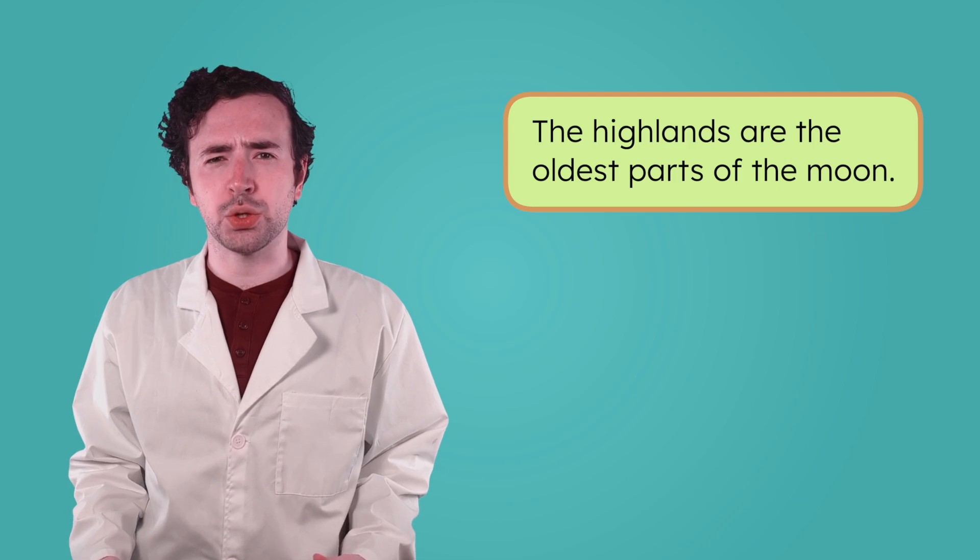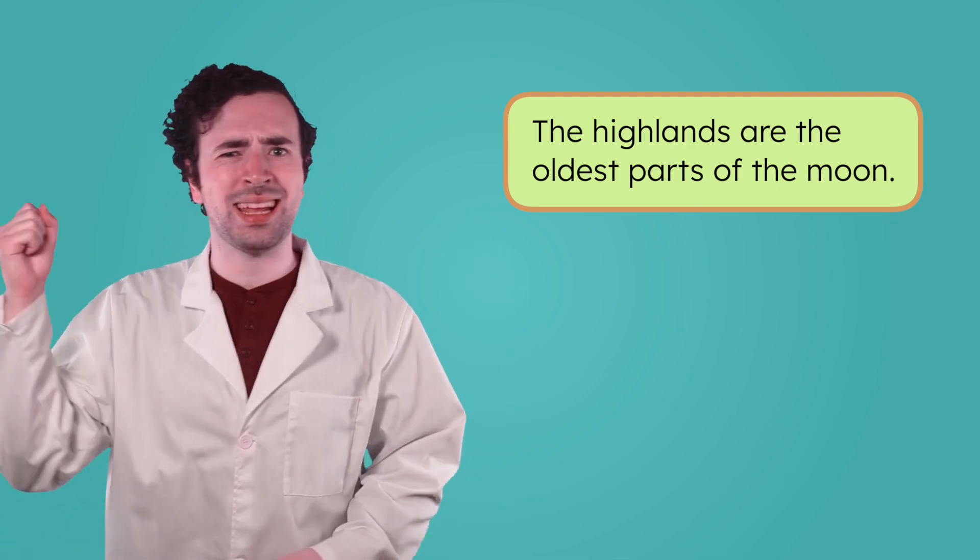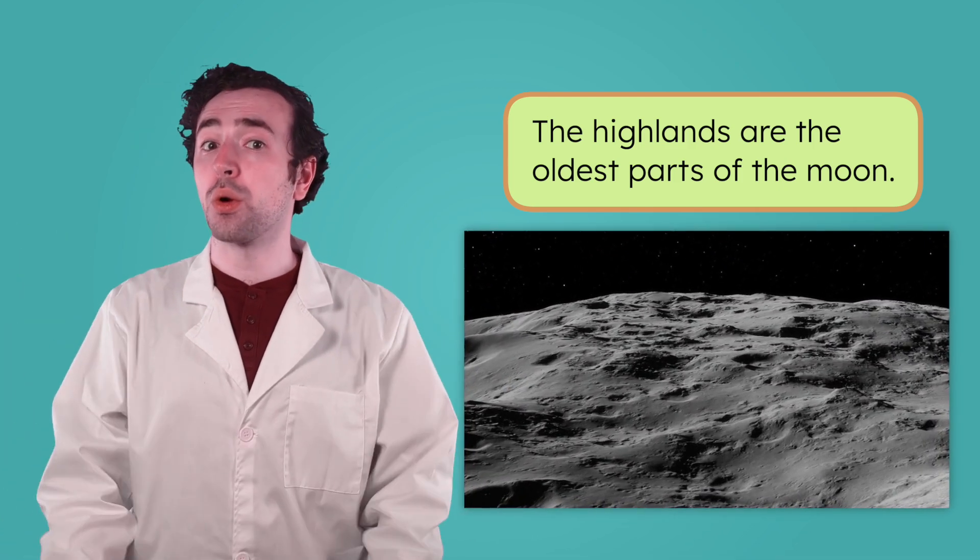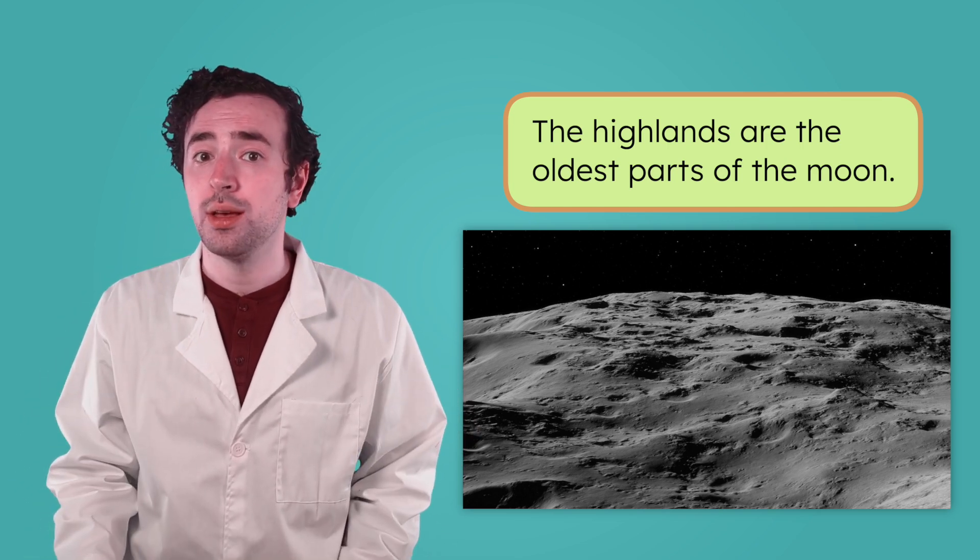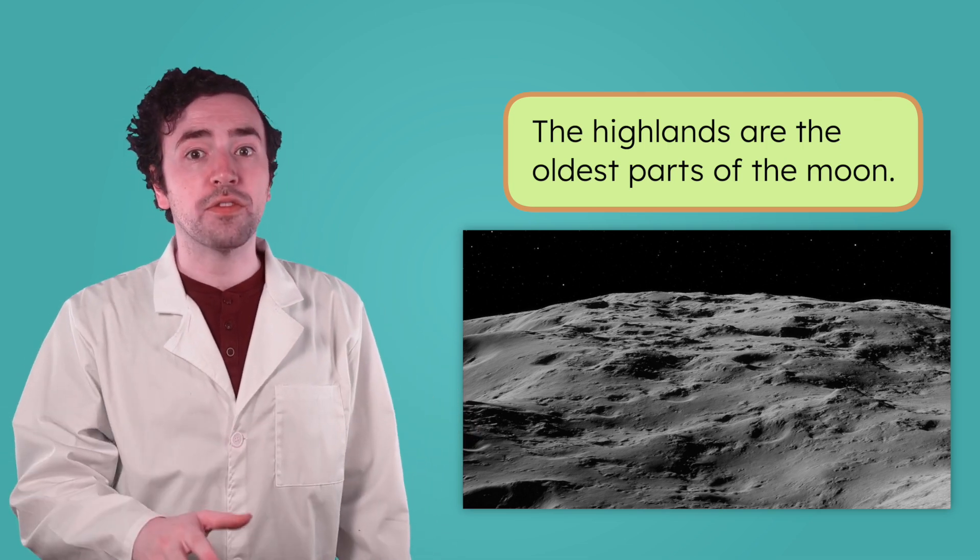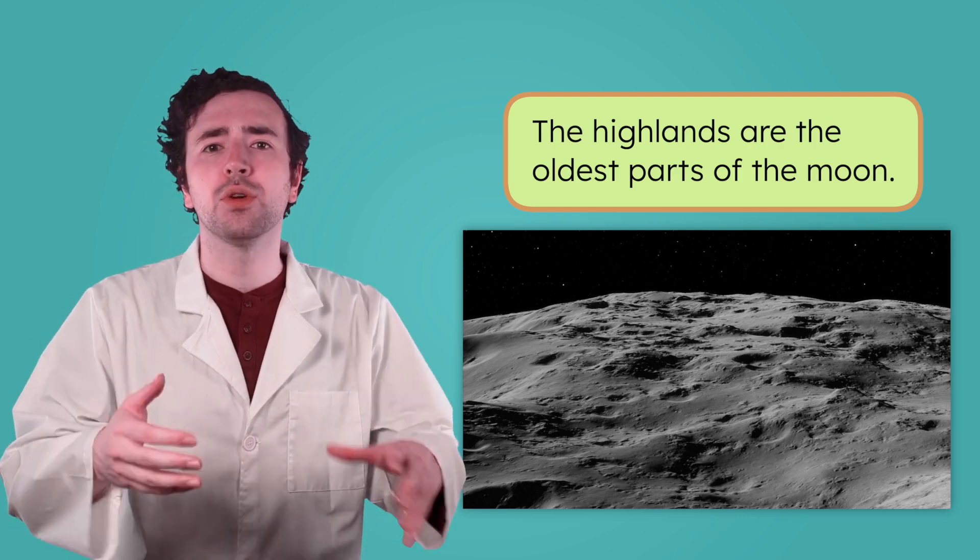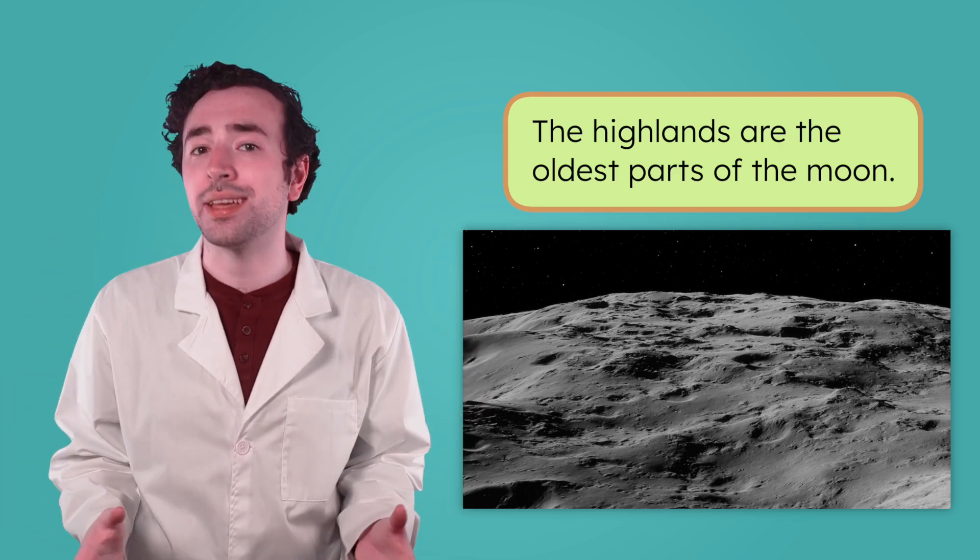For billions of years, space rocks crashed into the moon again and again. These impacts broke up the rock and left behind lots of bumps, cracks, and holes. That's why the highlands look rough and uneven. They've been hit so many times that they're full of sharp edges and high rocky hills.